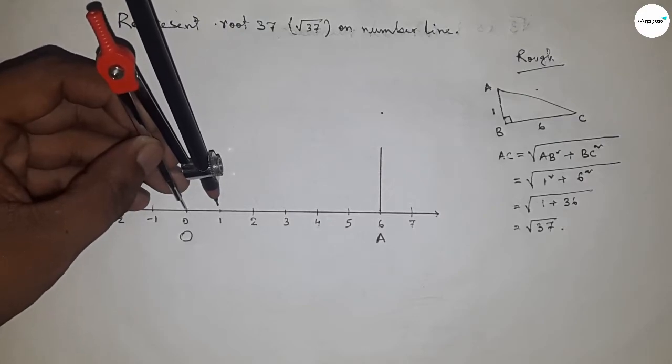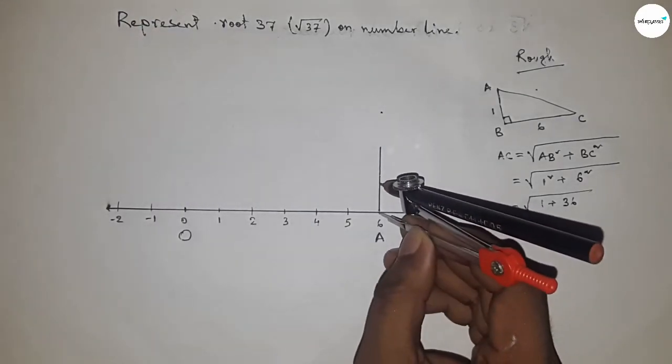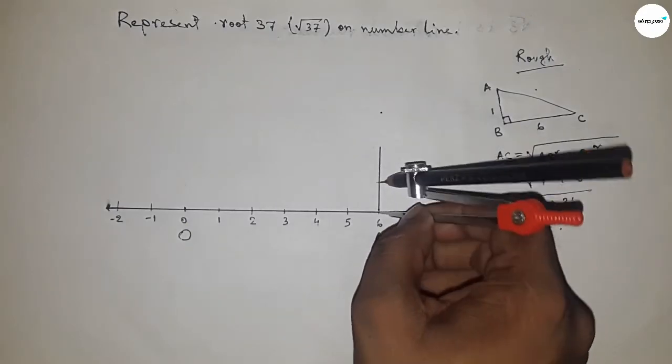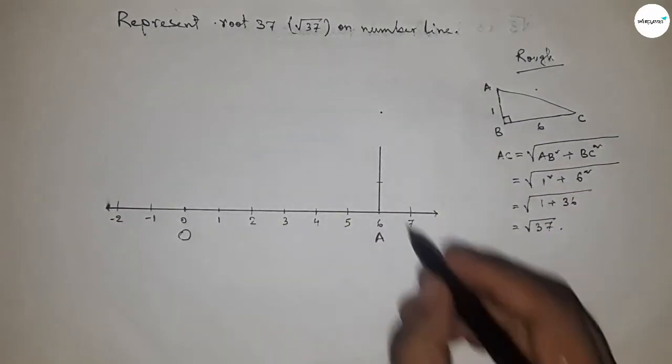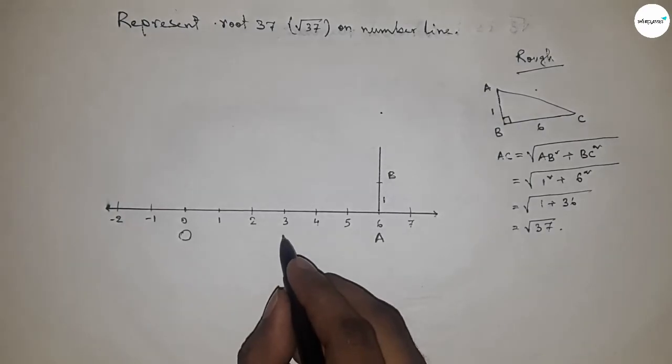Put the compass here and cut here. This is C, this is point B. This is one unit length and this is six unit length. Now join O and B using a ruler.